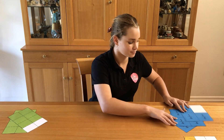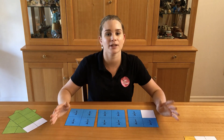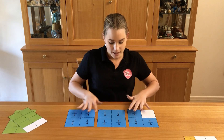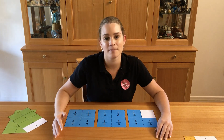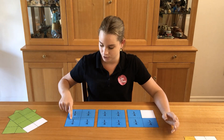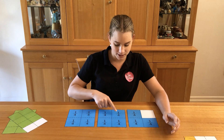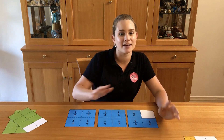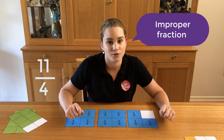Let's have a look at another one. This time we have three squares and each square is one whole. These squares have been divided up in four equal parts. How many one fourths have been coloured blue? We have one fourth, two fourths, three fourths, four fourths, five fourths, six fourths, seven fourths, eight fourths, nine fourths, ten fourths, eleven fourths. Eleven fourths have been coloured blue. This is an improper fraction.